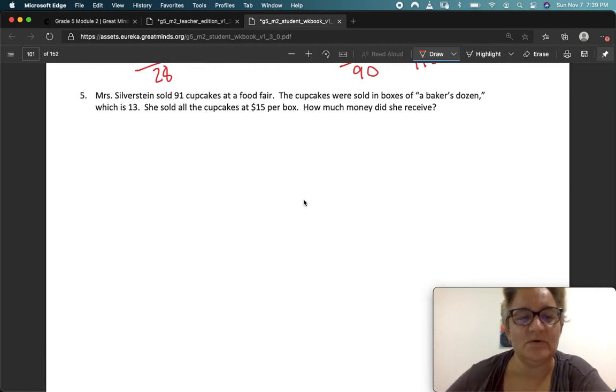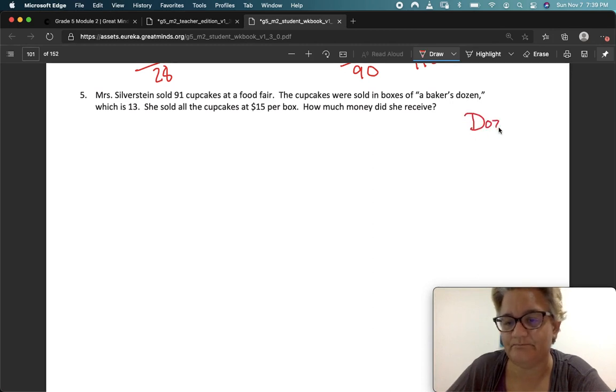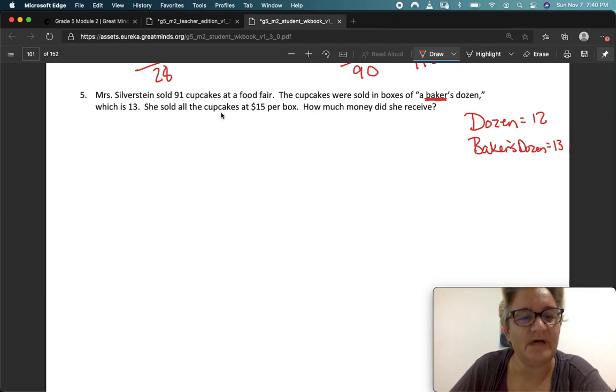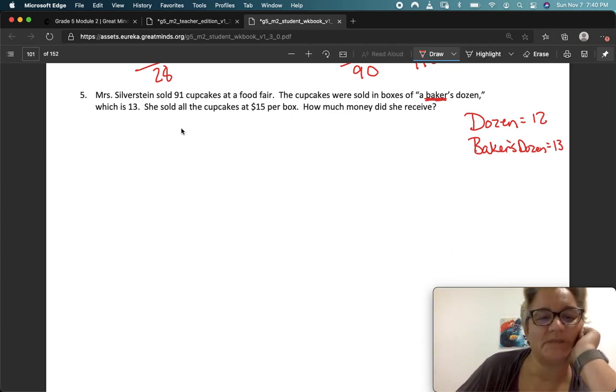Number 5. Mrs. Silverstein sold 91 cupcakes at a food fair. The cupcakes were sold in a box of a baker's dozen, which is 13. A dozen is 12, right? And a baker's dozen, because the baker throws in one more for fun. So a baker's dozen is 13. She sold all the cupcakes at $15 per box. How much money did she receive? So she sold 91 cupcakes. And we want to divide by 13, because each box had 13 in it. So let's see. 13 would go into 91 how many times? Well, we could round down to 10 and then try with a 9. Should we do that? Yeah, let's try that.